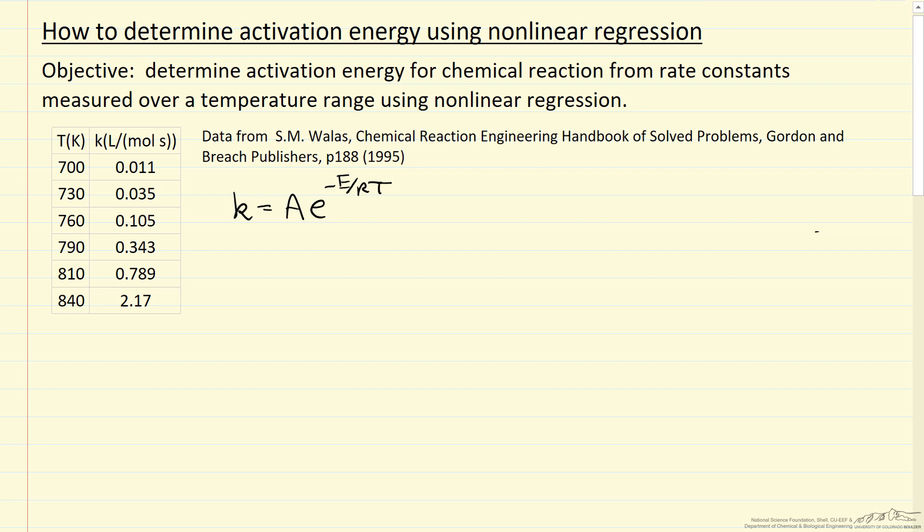The way we're going to do this is to rewrite this as K zero times exponential minus E over R, but now one over T minus one over T zero. So this K zero really corresponds to the rate constant evaluated at temperature T zero.